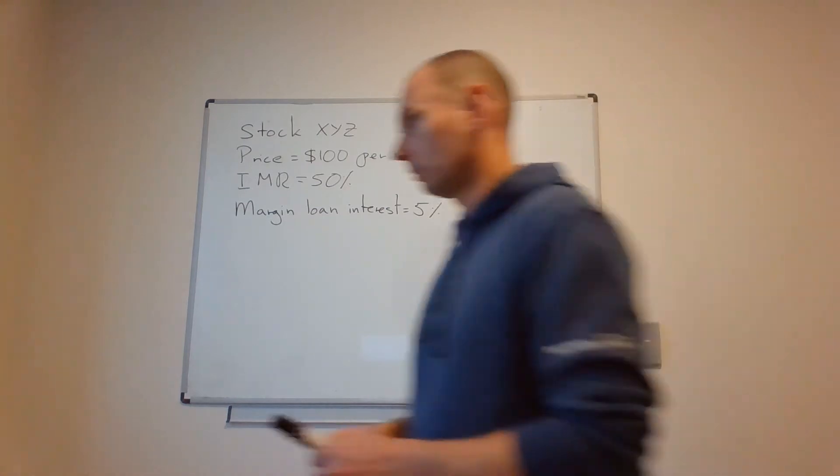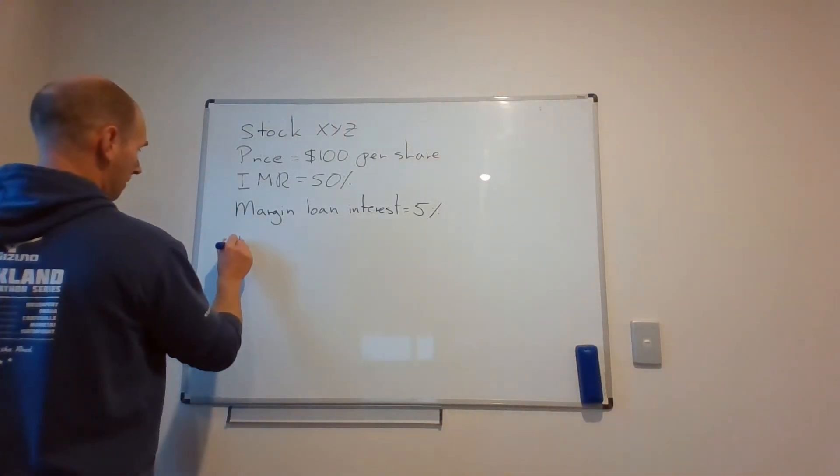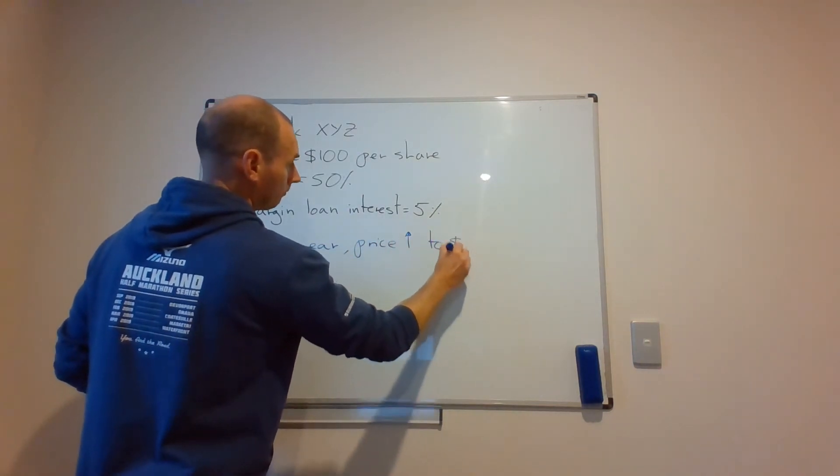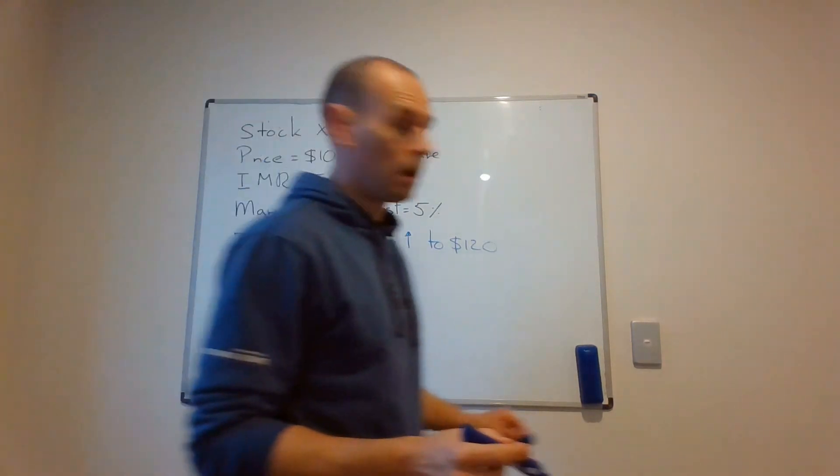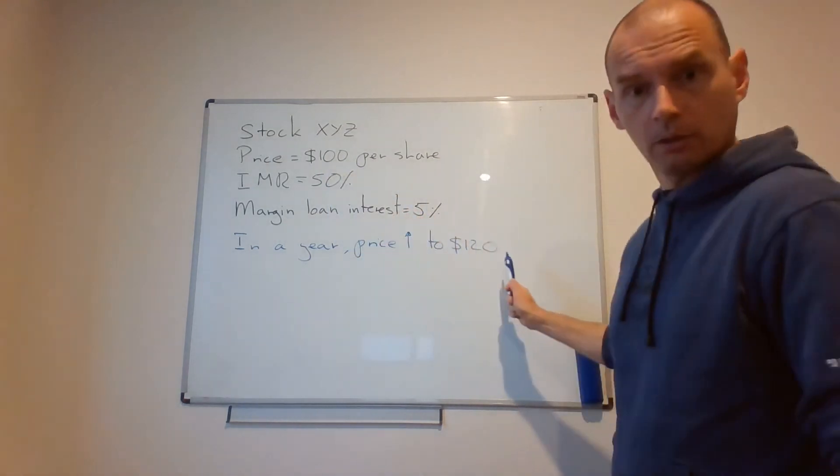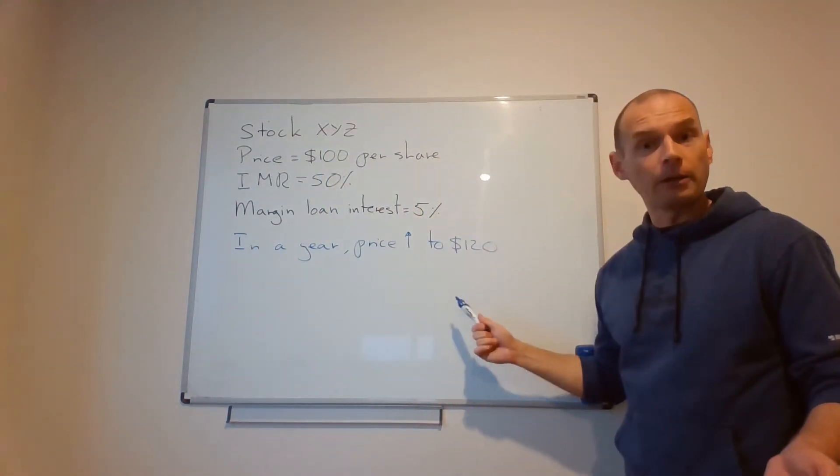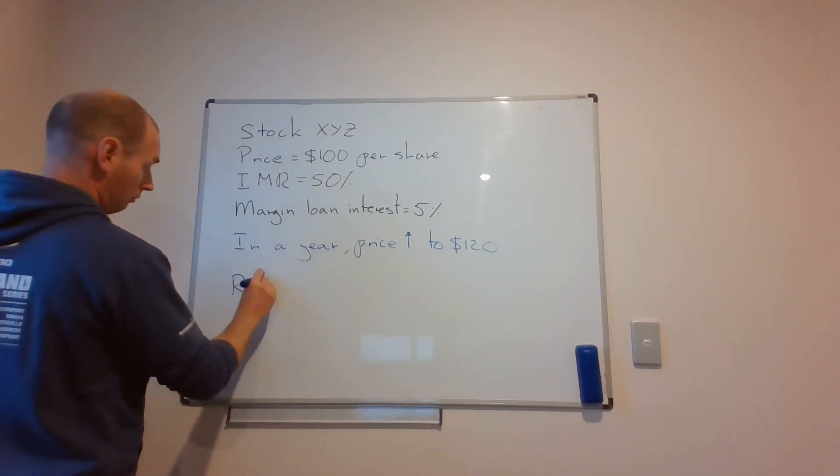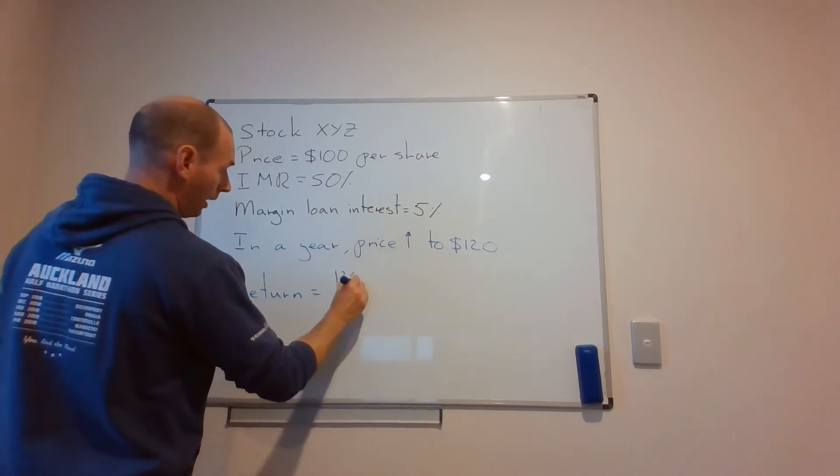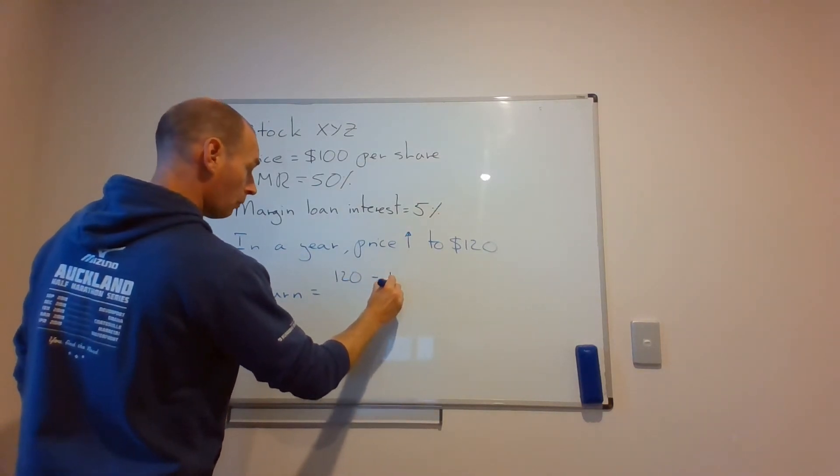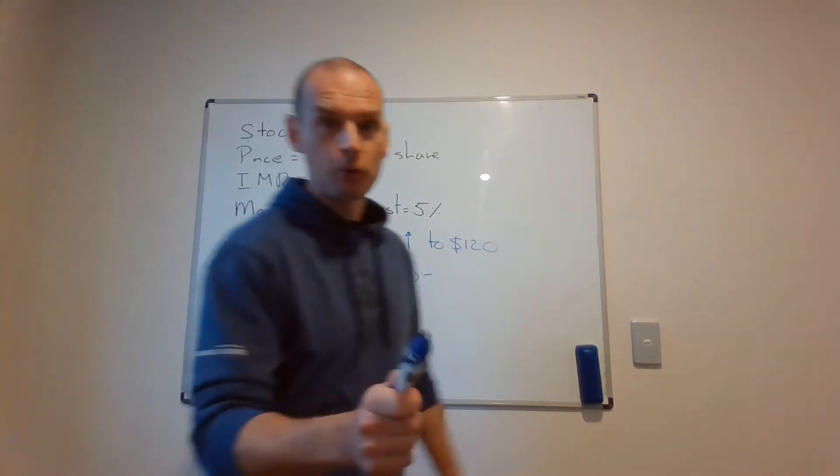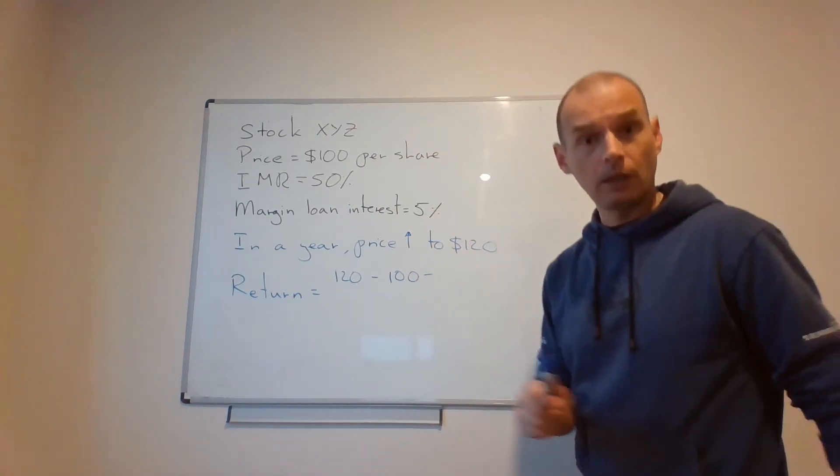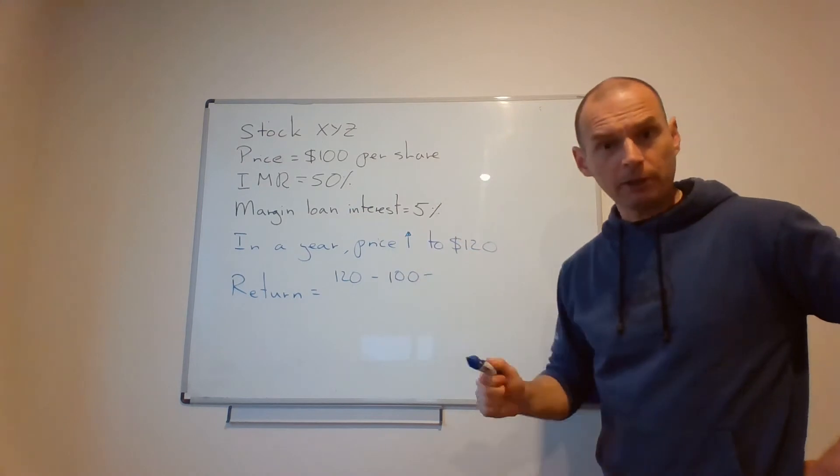Let's say that in a year, price goes up to 120. Had you been a cash buyer, your return on this purchase would have been 20%. But in case of the margin purchase, your return will be amplified. It will be value at the end, 120, minus value at the beginning, 100. I also have to compute the margin loan interest. I have borrowed 50 bucks here, 50% of my purchase price. And 5% of 50 bucks is two and a half dollars.